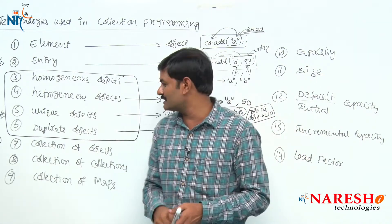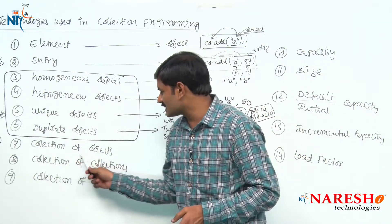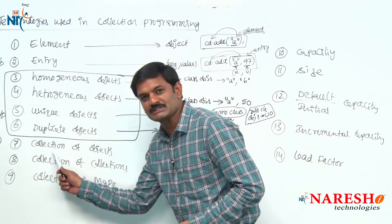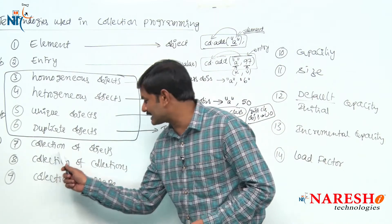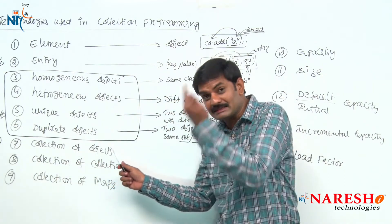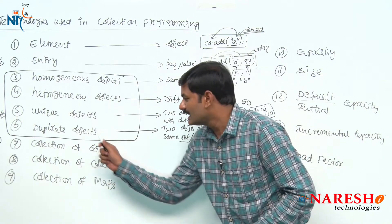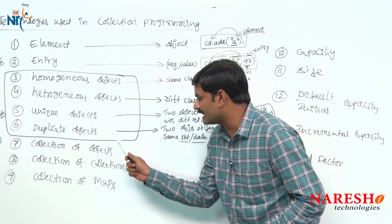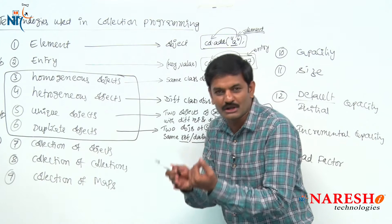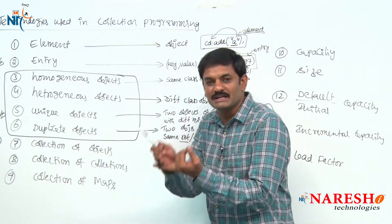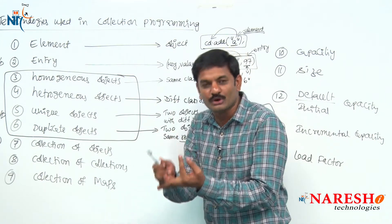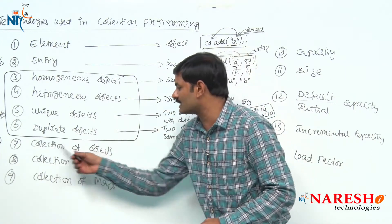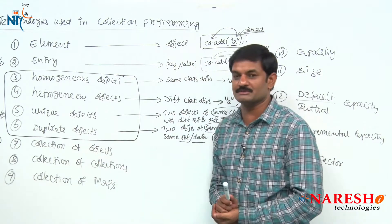So, collection of objects — what is the meaning? There is one collection object that contains other objects. A collection that contains normal objects, string objects, integer objects, student objects, employee objects, bike objects — that is what? Collection of objects.